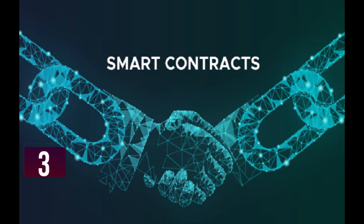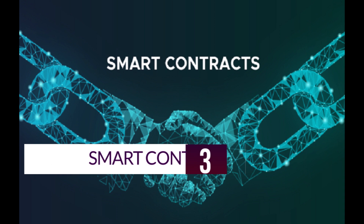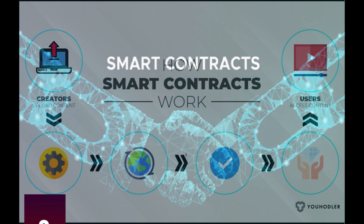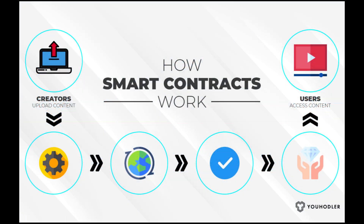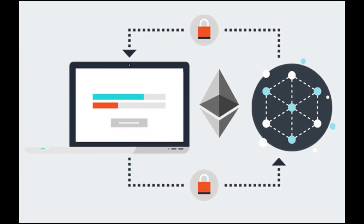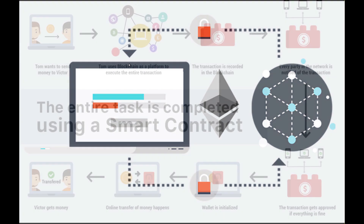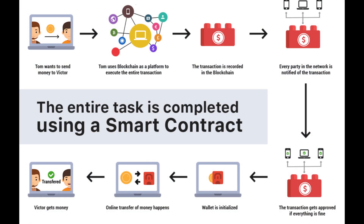3. Smart Contract. A smart contract is a computer program or a transaction protocol which is intended to automatically execute, control or document legally relevant events and actions according to the terms of a contract or an agreement. For example, a smart contract could be programmed to release funds for someone's birthday each year. It could also be programmed to release payment once someone confirms receipt of delivered goods. It could be used to enforce particular rights for holders of digital assets.